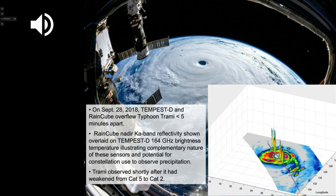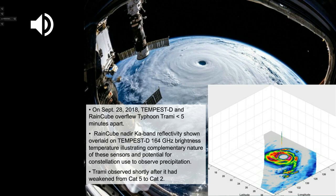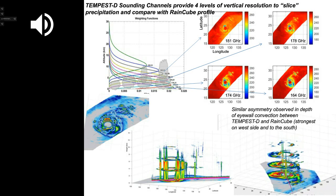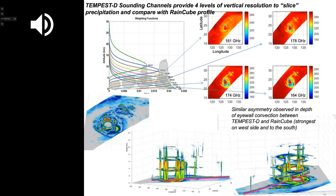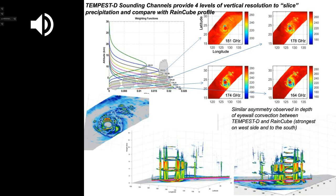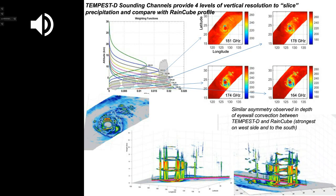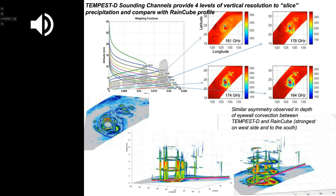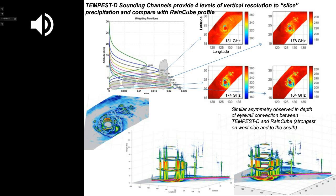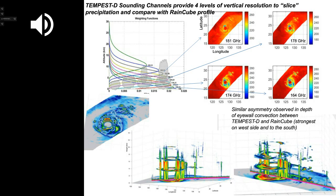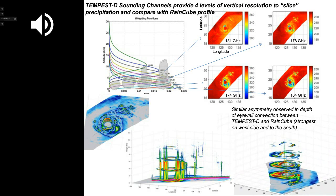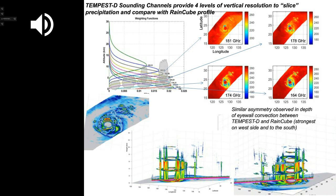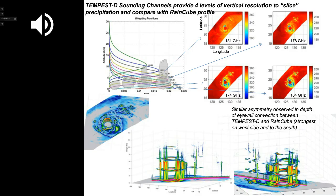We get not only one level but four levels in the atmosphere, based on the 183 GHz water vapor absorption line. As you move further away from 183 GHz — from 181 down to 164 GHz — you see deeper and deeper into the atmosphere due to pressure broadening of the absorption line, giving us vertical profiling capability.